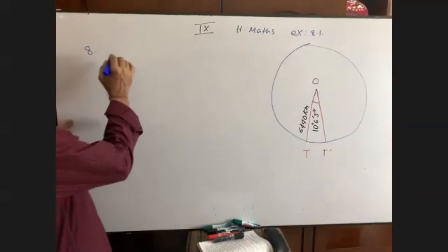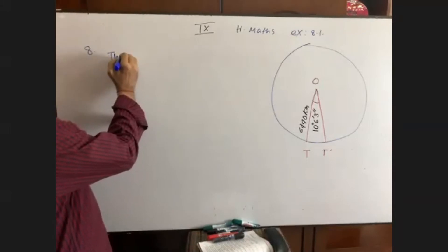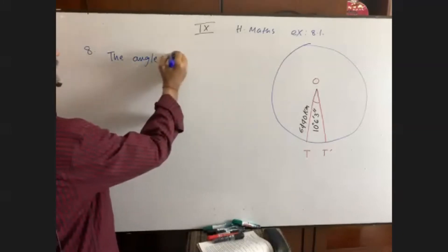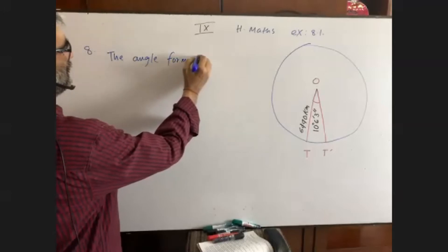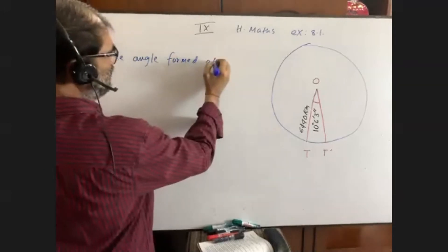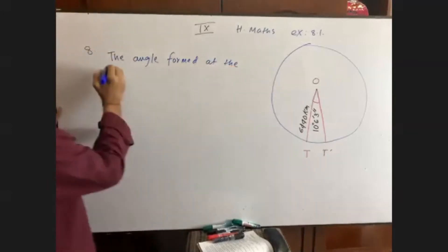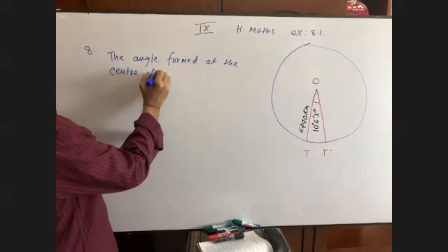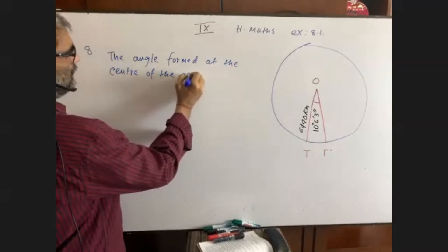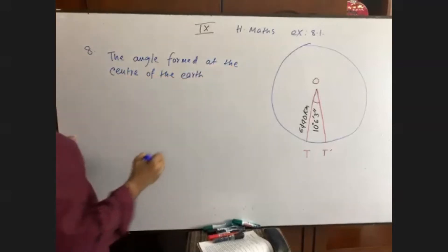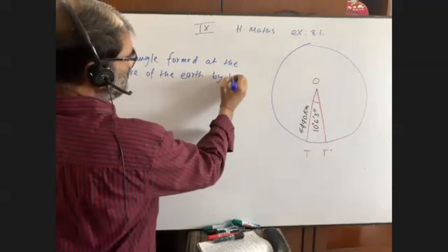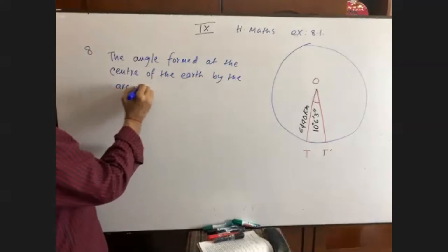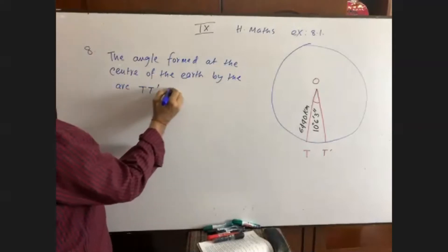Write down the angle formed at the center of the arc by the arc TT prime — theta. The angle theta is equal to 10 degrees, 6 minutes, 3 seconds.